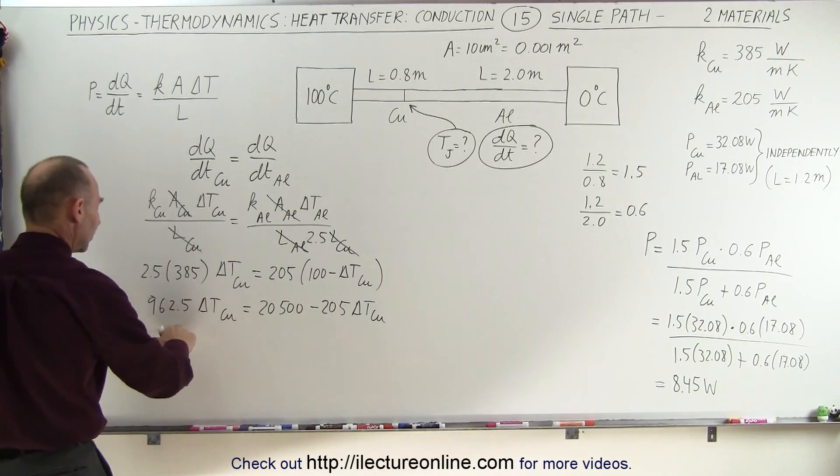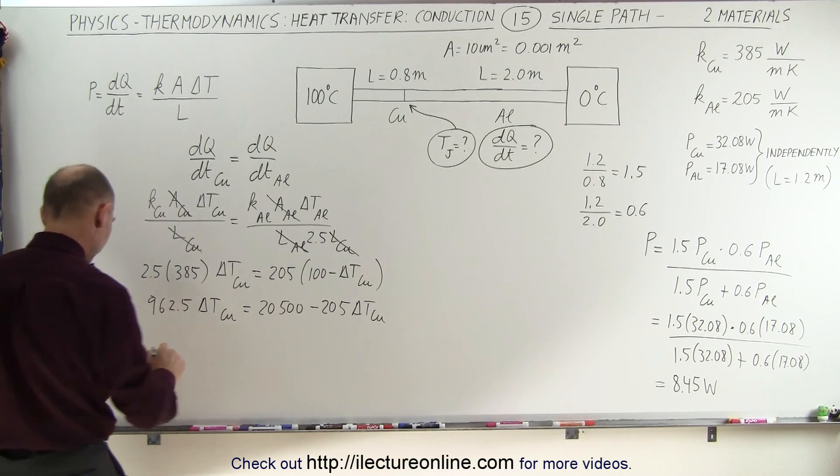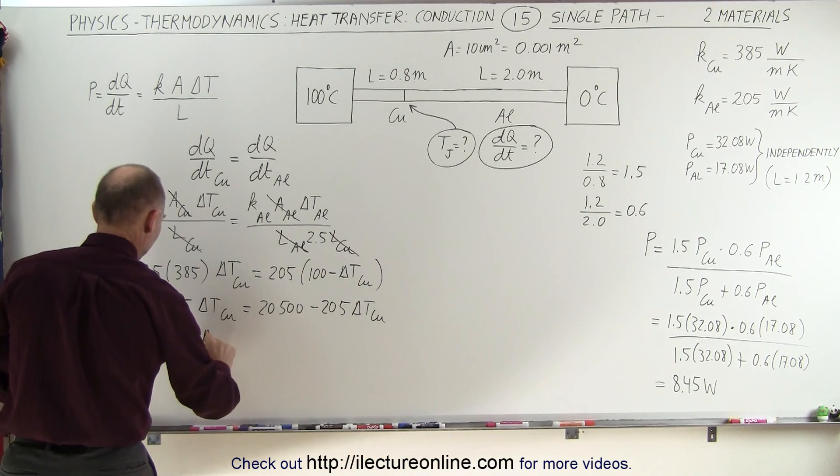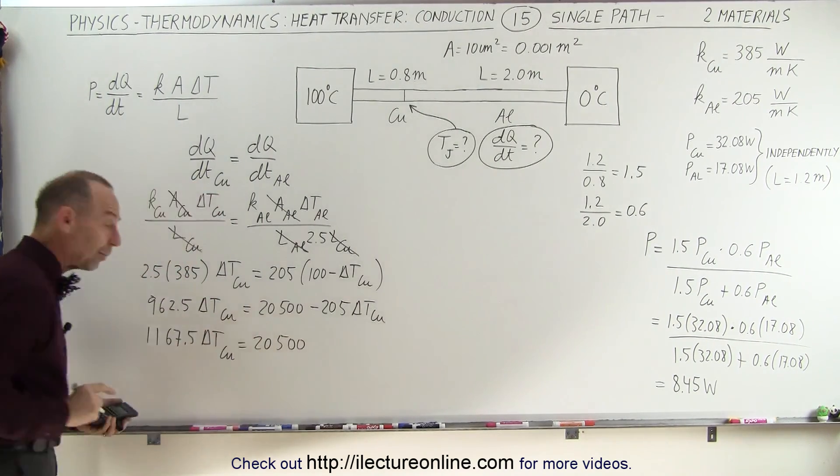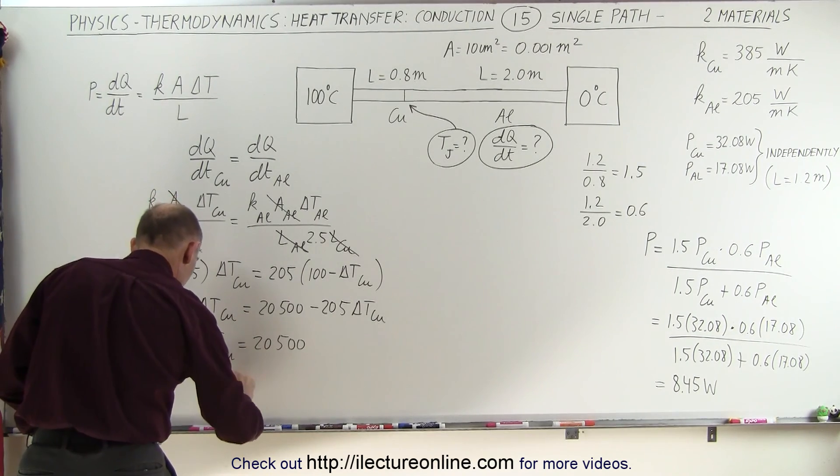Now we can move this to the other side. All right, we add that to this, we get plus 205, so we get 1167.5 times the delta T of the copper equals 20,500, which means that we can now solve for the change in the temperature across the copper section.